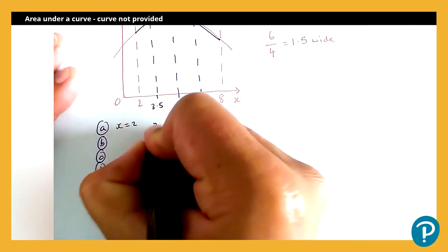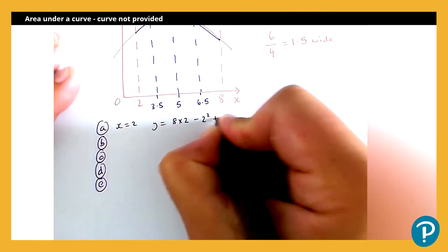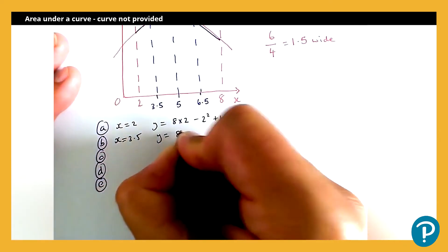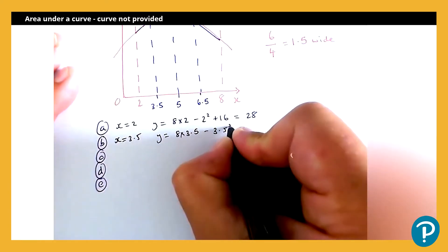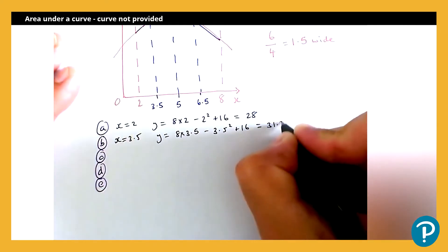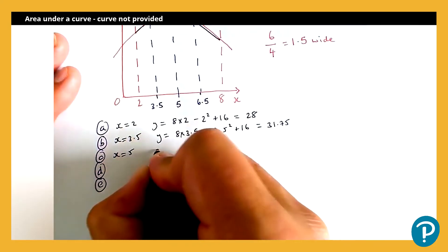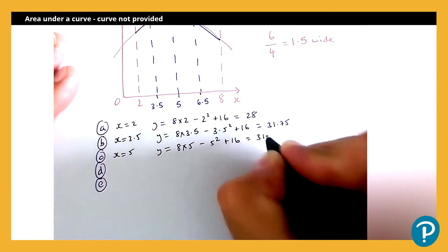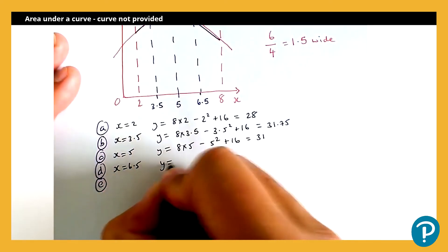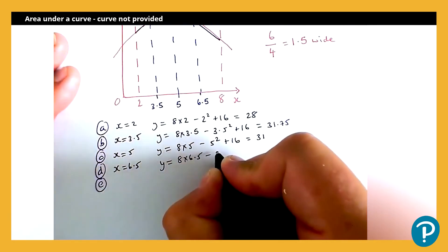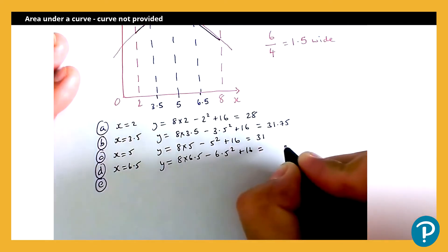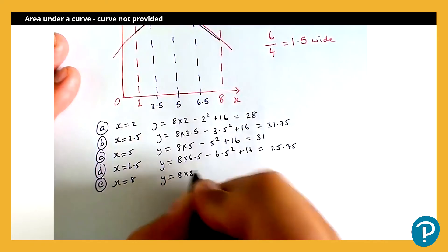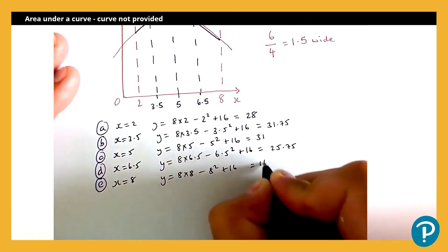So when x equals 2, y is going to be equal to 8 times 2, subtract 2 squared plus 16, which gives me 28. When x equals 3.5, y is going to be equal to 8 times 3.5, subtract 3.5 squared plus 16, which comes to 31.75. When x equals 5, I've got y equals 8 times 5, subtract 5 squared plus 16, which comes to 31. When x equals 6.5, y is equal to 8 times 6.5, subtract 6.5 squared plus 16, which is 25.75. And then finally, when x equals 8, y is equal to 8 times 8, subtract 8 squared plus 16, which is equal to 16.